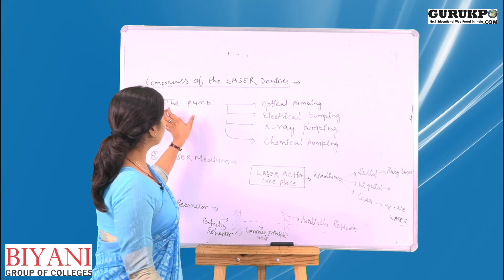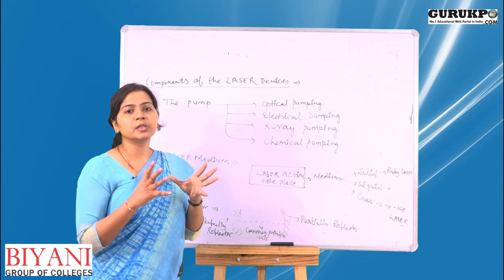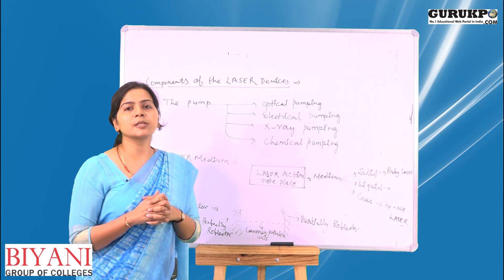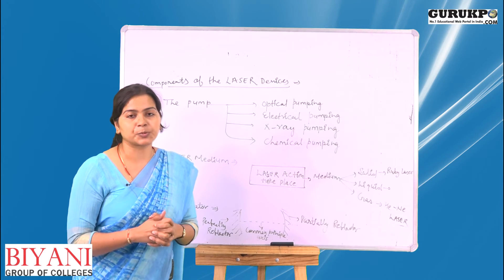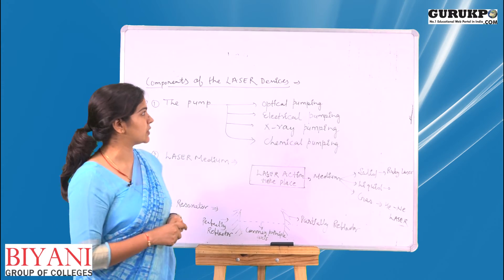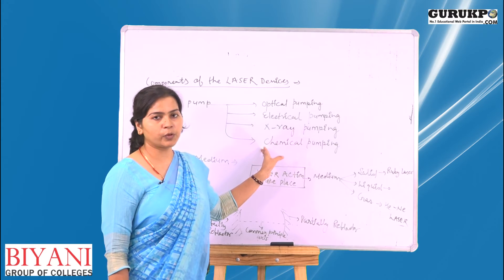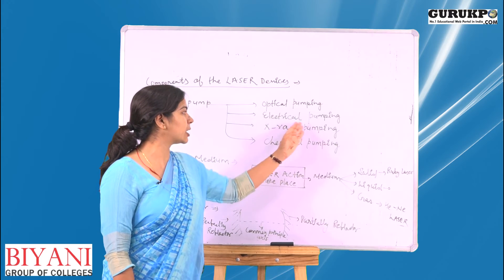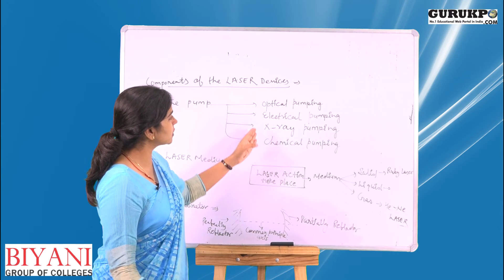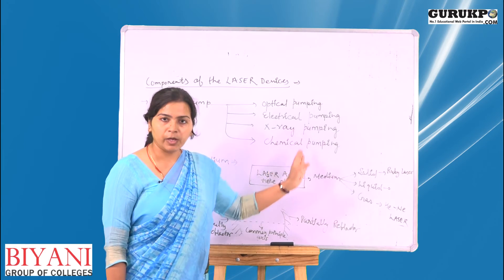First, the pump. The pump is the energy source — it is an external energy source which helps us to obtain the population inversion condition. The pump is further classified in four ways: optical pumping, electrical pumping, x-ray pumping, and chemical pumping. All are used with such types of substances and we give them the name of pumping.